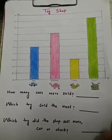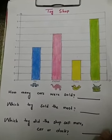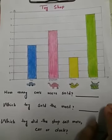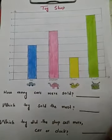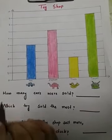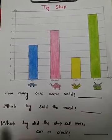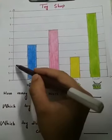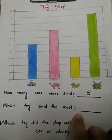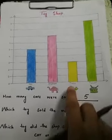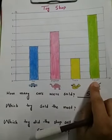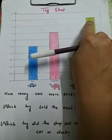Here's another example about a toy shop. There was a sale on Monday and we are going to discuss which toys were sold. I have colored these blocks already. How many cars were sold? Count the blocks — one, two, three, four, five — five cars were sold. Which toy sold the most? The drum — nine drums were sold.